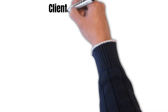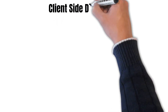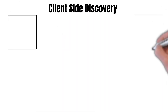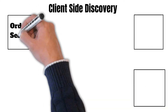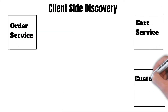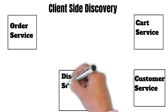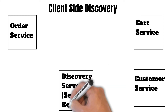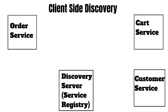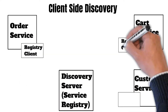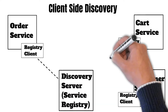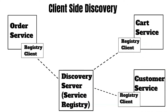To understand client-side discovery, let's take an example of a set of services — for example, order service, card service, and customer service. In order for these services to know the address of each other, we need a discovery server, which is our service registry. All three services — order service, card service, and customer service — have their registry client, which registers themselves with the discovery server.